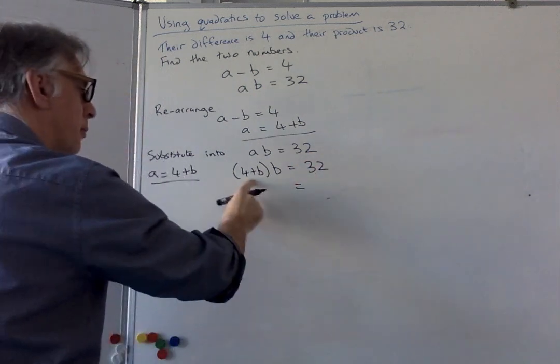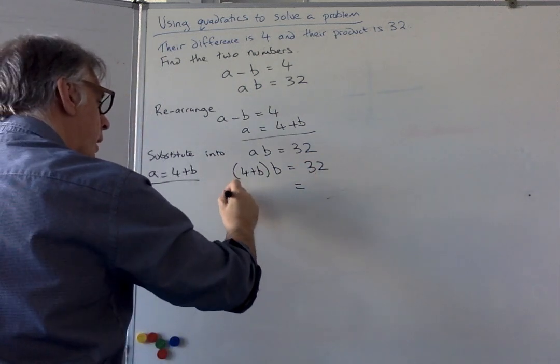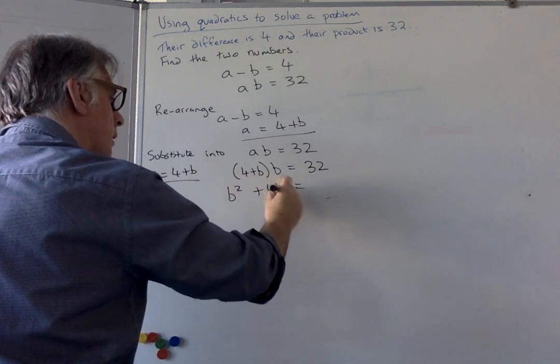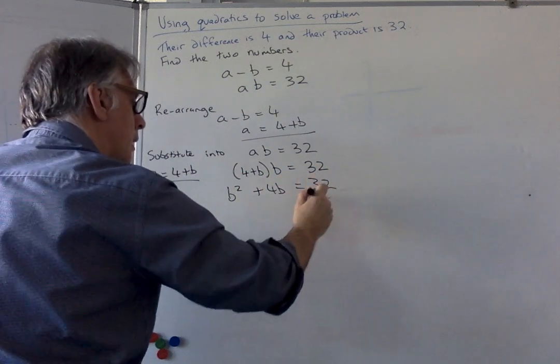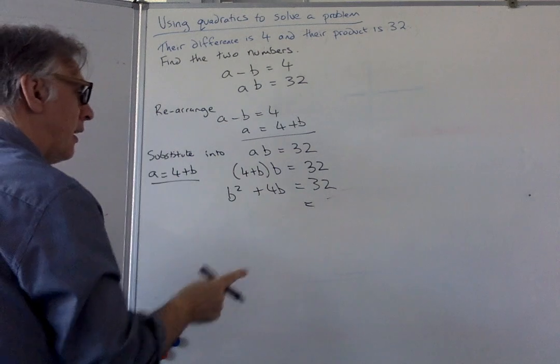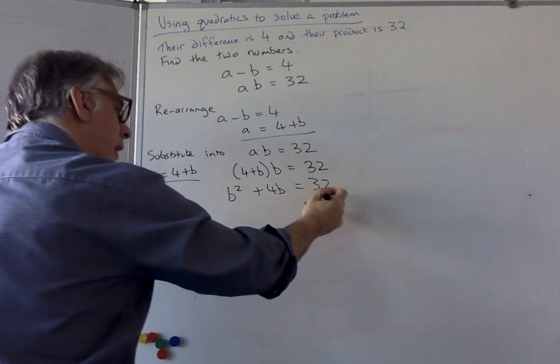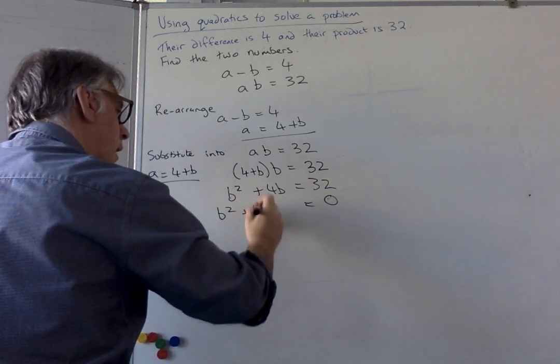And then it's just asking to be times'd out, so I'm going to get B squared plus 4B. That's 32. To solve a quadratic, you have to set it to what special number? Correct, 0.